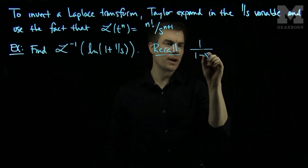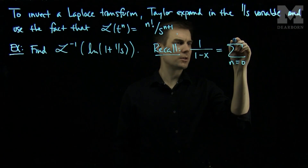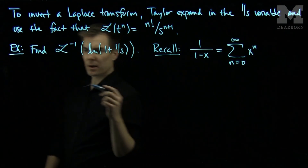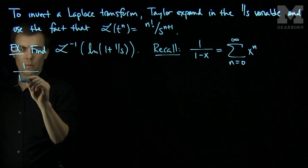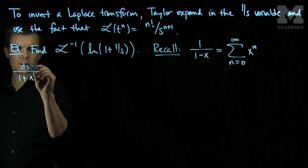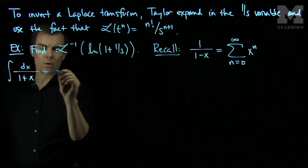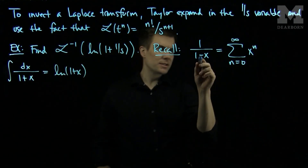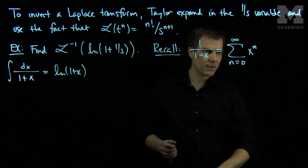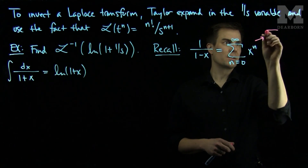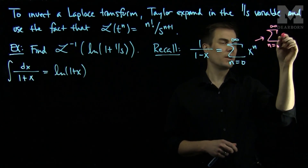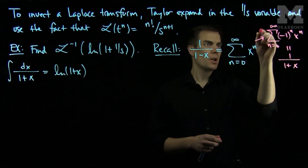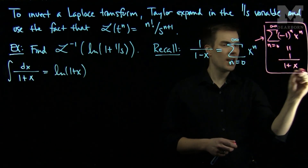Namely, that 1 over 1 minus x is the sum, n goes from 0 to infinity, of x to the n. I can use this formula and say that the integral of 1 over 1 plus x dx will be the natural log of 1 plus x. So if I replace x with negative x, we'll be able to deduce that the sum, n goes from 0 to infinity, of negative 1 to the n times x to the n, will be 1 over 1 plus x. I will use this series expansion in my integral.